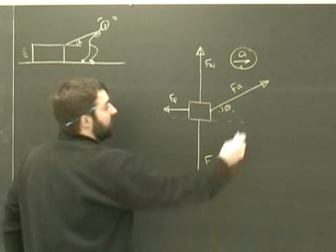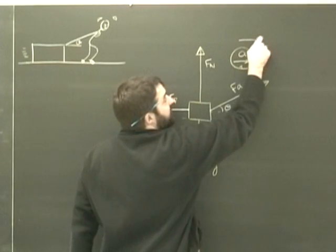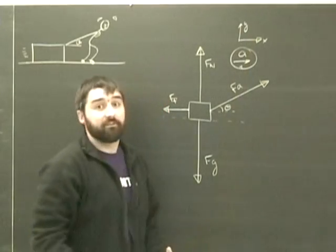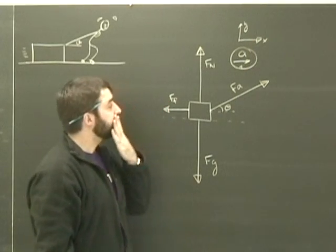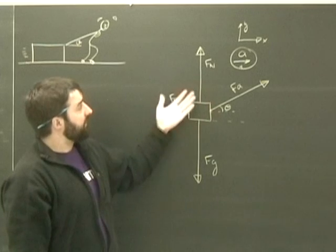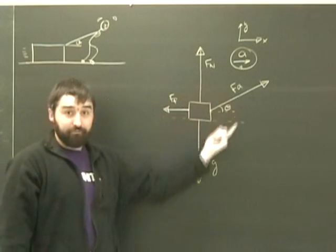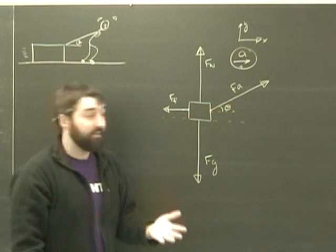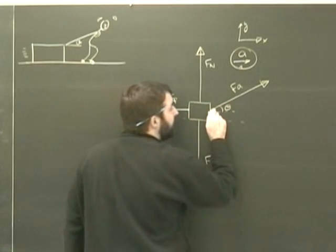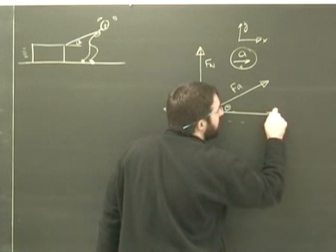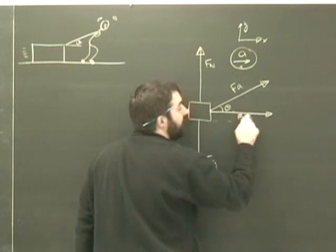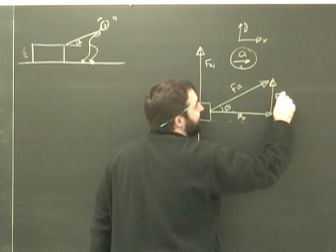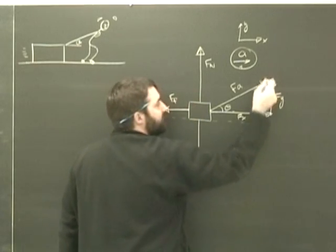I'm going to go ahead and call the x direction the direction of acceleration — that's what I always do — so that the y direction the acceleration will always be zero. Now that I've got my free body diagram, all the forces on the diagram are already in the y and x direction with the exception of Fa. So I'm going to take Fa and break it into components: I'm going to call them Fx and Fy.